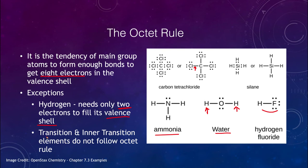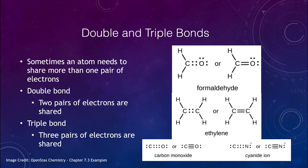Note that this does not work for transition and inner transition elements — these do not follow the octet rule. Now, sometimes atoms need to share more than one pair of electrons, which leads us to double or triple bonds. Let's take a look at some examples of those.